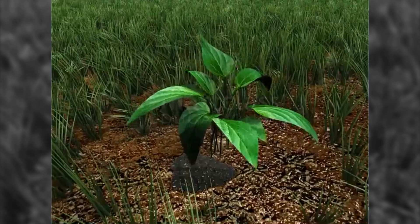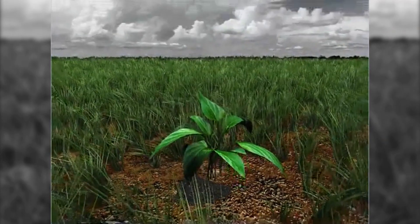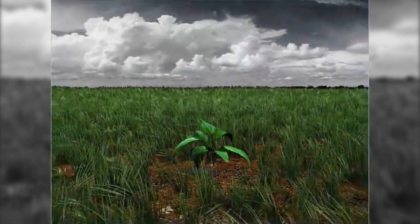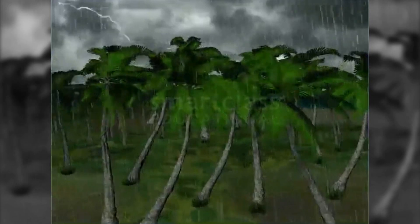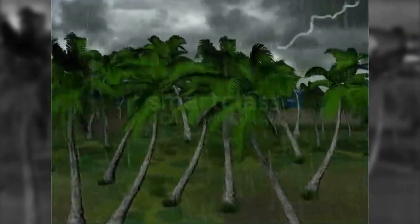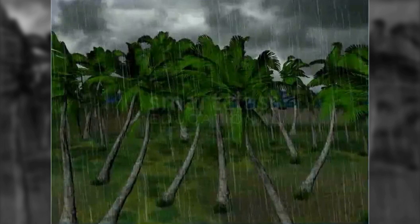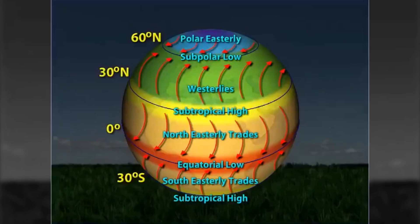Rainfall along the warm front is usually in the form of drizzle and of long duration, whereas along the cold front it is thundershowers of very short duration. Frontal rainfall mainly occurs in the mid-latitudes, where the warm moist air from the subtropics meets the cold polar air from the polar regions.